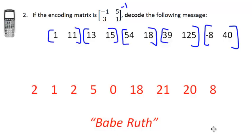You're at the end of the lesson — encoding and decoding messages using matrices. In the spirit of encryption, here's a fun clip from the movie A Beautiful Mind, where a very smart guy is brought in to help the government decode top-secret spy messages. Good luck on your mastery check.